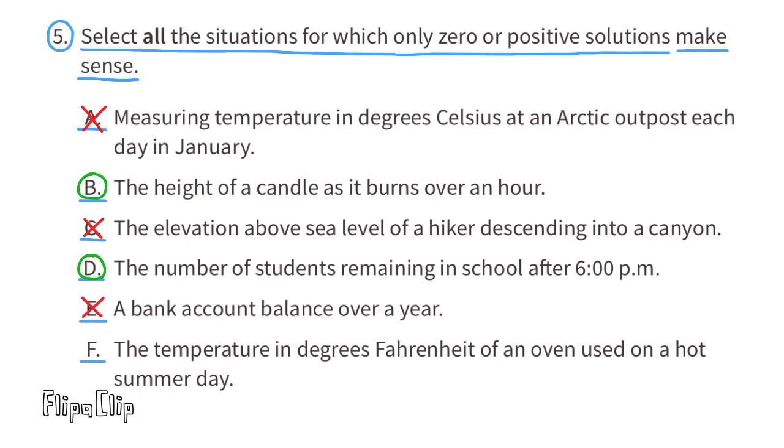F. The temperature in degrees Fahrenheit of an oven used on a hot summer day. They give us a few clues. One is that the oven's being used. So if the oven's being used, its temperature will be positive. The other clue is that it's a hot summer day, and a hot summer day's temperature would also be positive. So even if the oven wasn't being used, the temperature of the oven would be a positive temperature. Only 0 or positive solutions make sense for situation F.